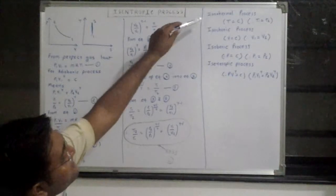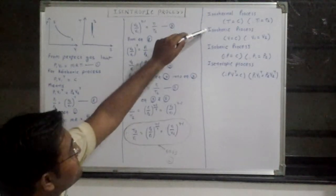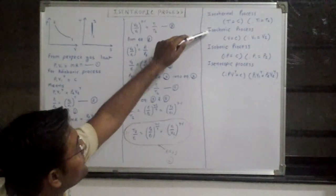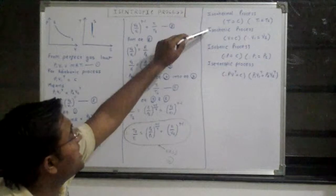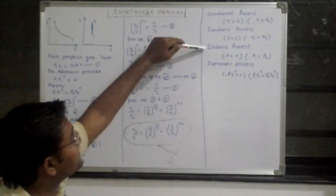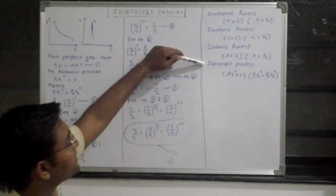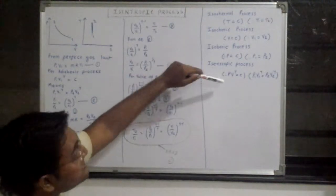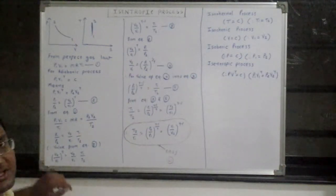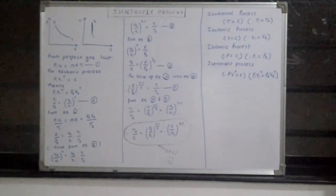There are some other related processes: isothermal process means temperature remains constant; isochoric process means volume remains constant; isobaric process means pressure remains constant; and isentropic process means entropy remains constant. Thank you.